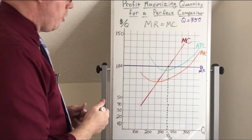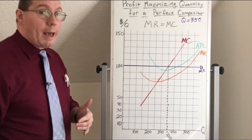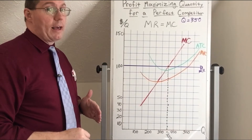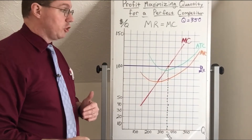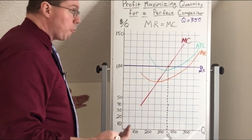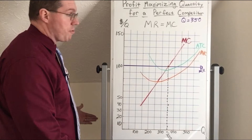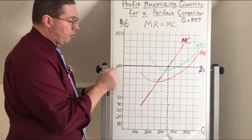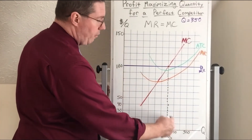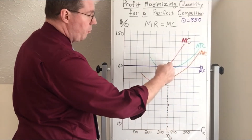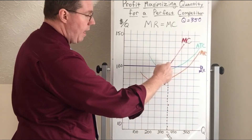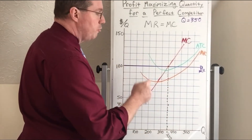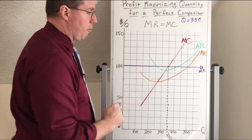The next thing we would do is identify the price we're going to charge. But we're price takers here, so we're not going to determine the price. The price is currently $100. So we have 350 units that we are going to sell at a price of $100, and that is going to maximize our profit.